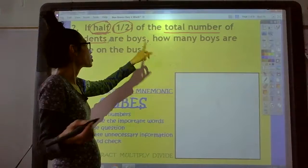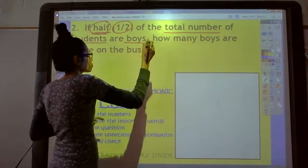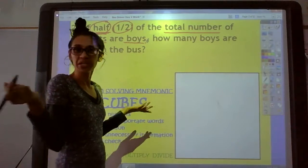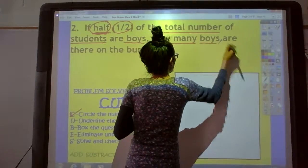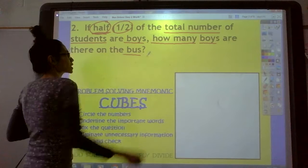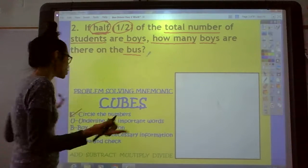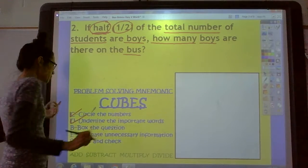Okay, we can underline the boys. How many? That might be important. How many boys? Oh, there's another boy. On the bus. Okay, if you want to underline bus, that's fine, too. All right, so we are done with the U step.